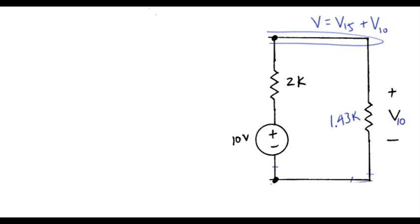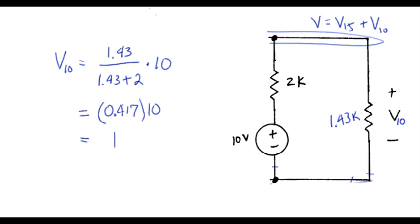So now we've got 2 resistors and a voltage source. These are arranged as a voltage divider. So we have V10 is, again I'll just drop the K because we've got that common on both, 1.43 divided by 1.43 plus 2, times 10 volts. And that fraction works out to be 0.417 times 10. So V10 is 4.17 volts.